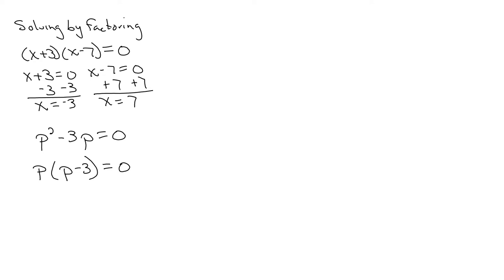Set each factor equal to 0. So p=0, p-3=0. p equals 0, you can't change, but we can add 3 to both sides. So we have p=3. Our two solutions, 0 and 3.